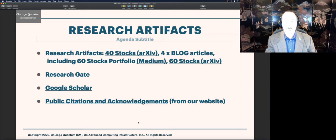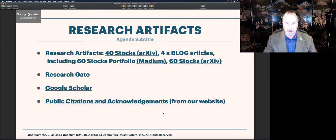Here's our research artifacts where you can find them. We have two papers in archive. Our medium has a number of blog articles. ResearchGate, Google Scholar. And we list all of the public citations and acknowledgements that we received on our website. These links are active. I'm assuming D-Wave will post this chart.